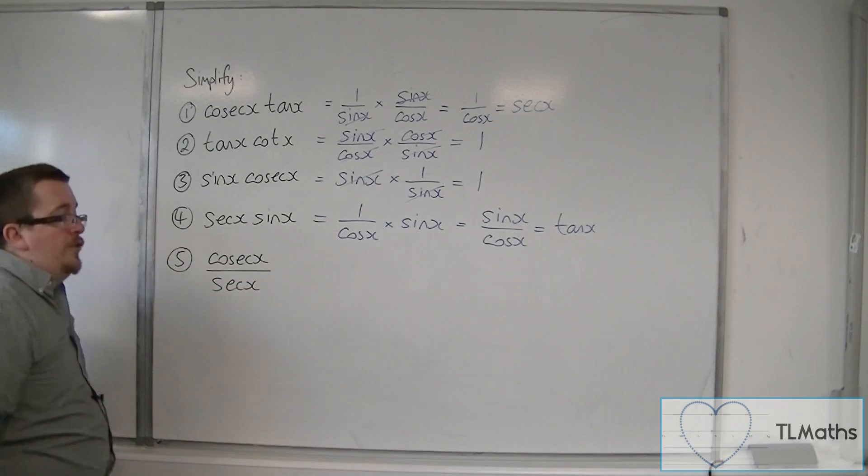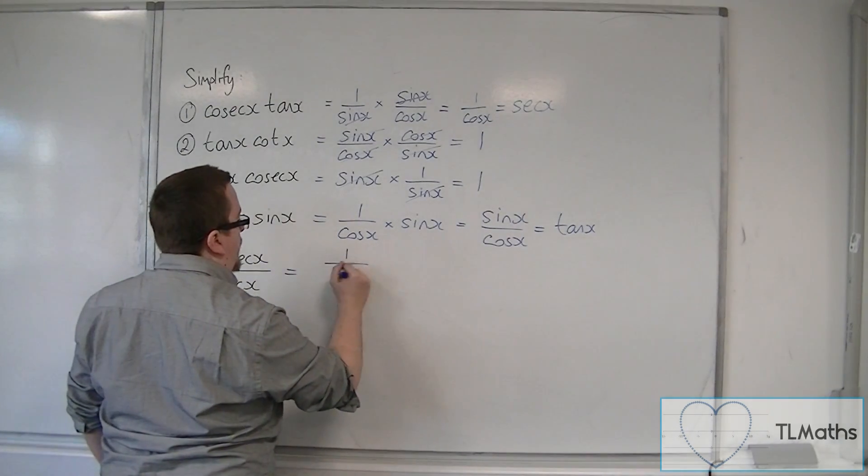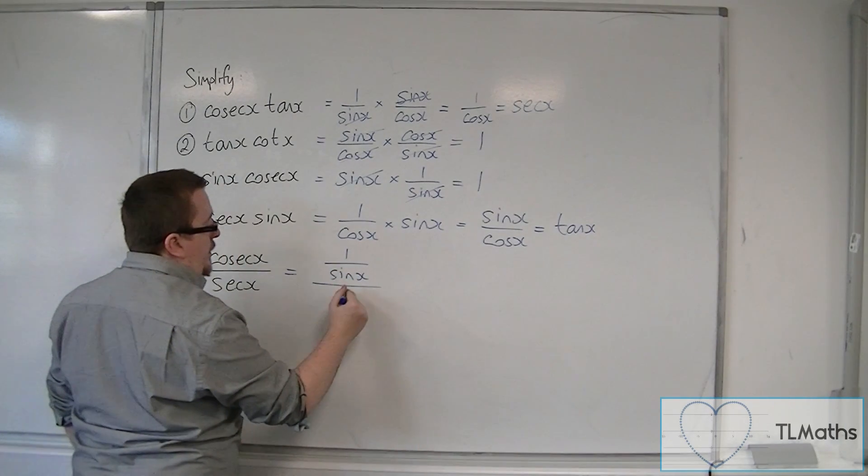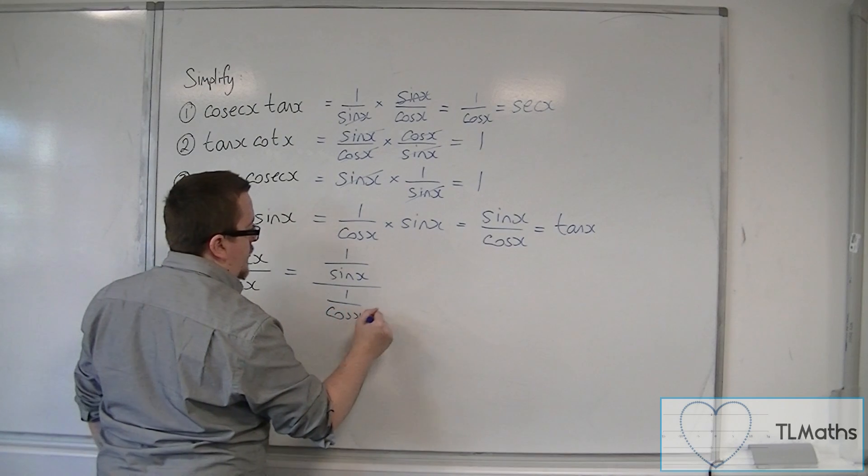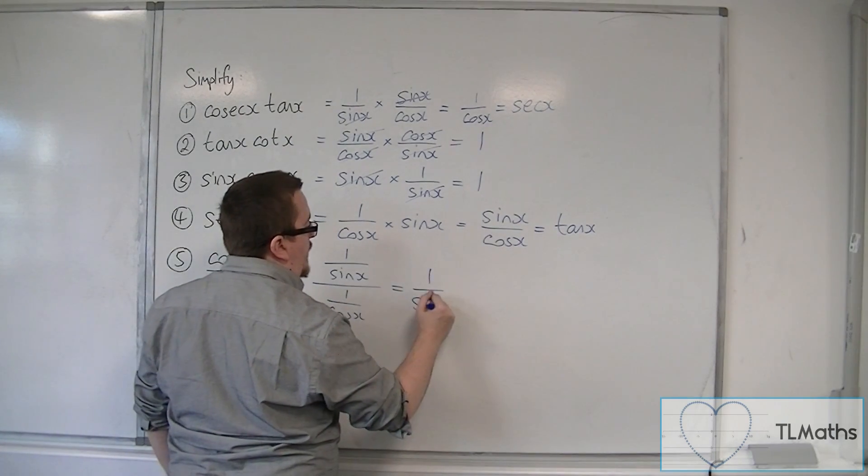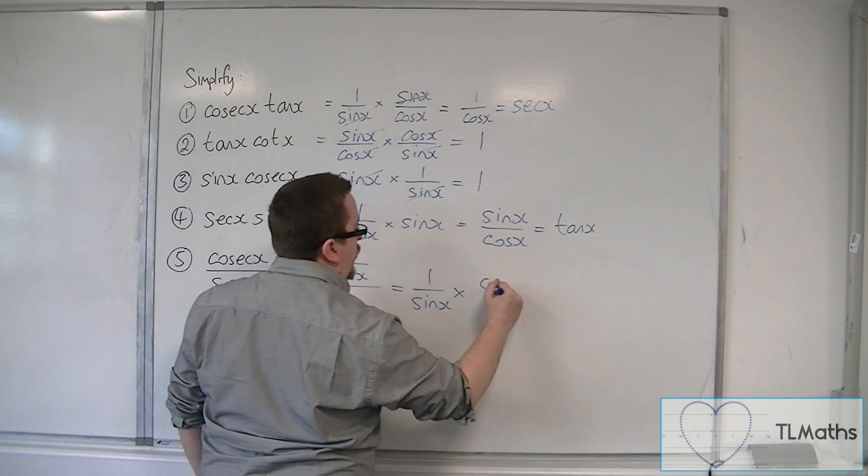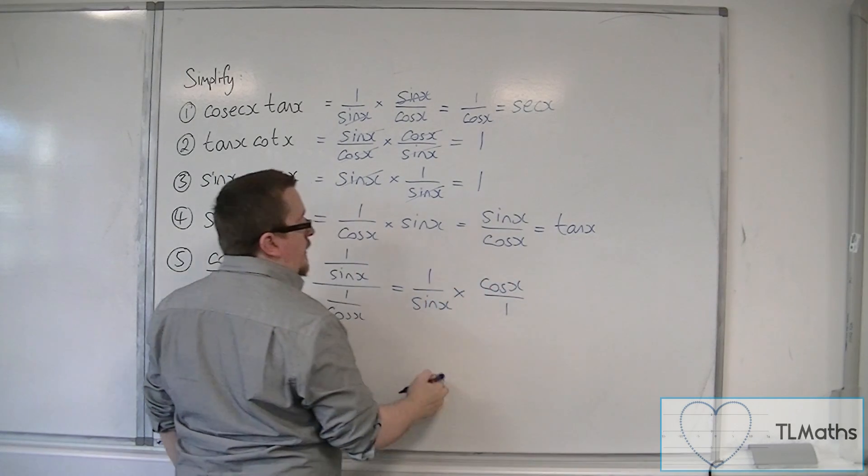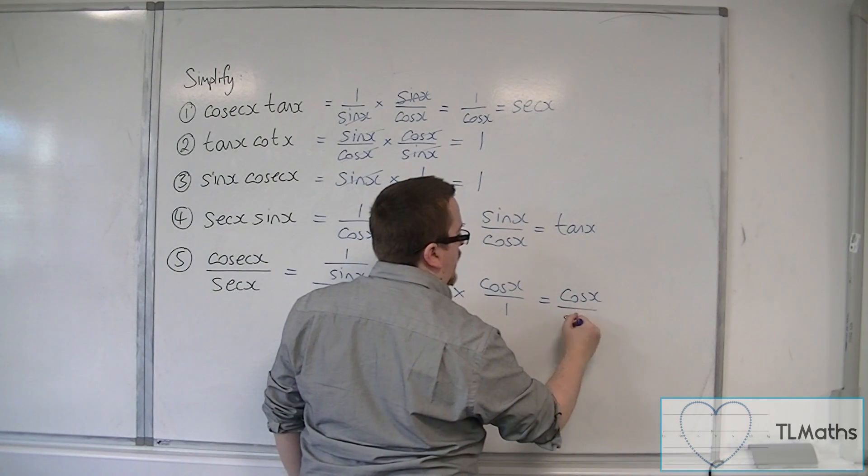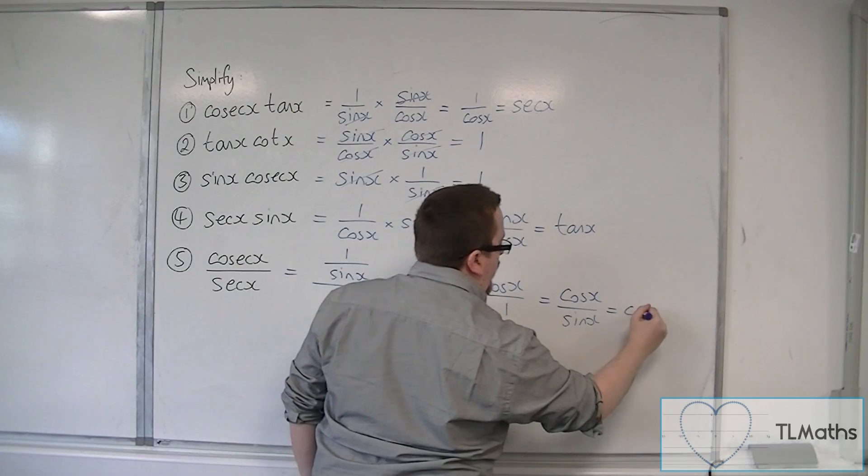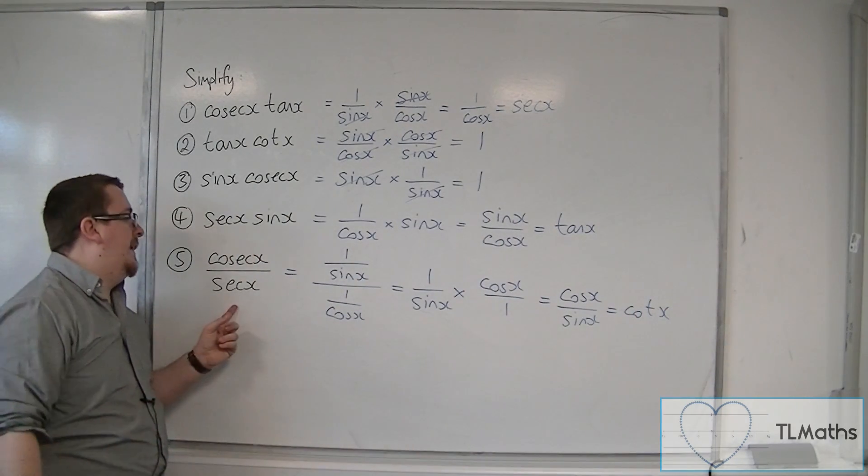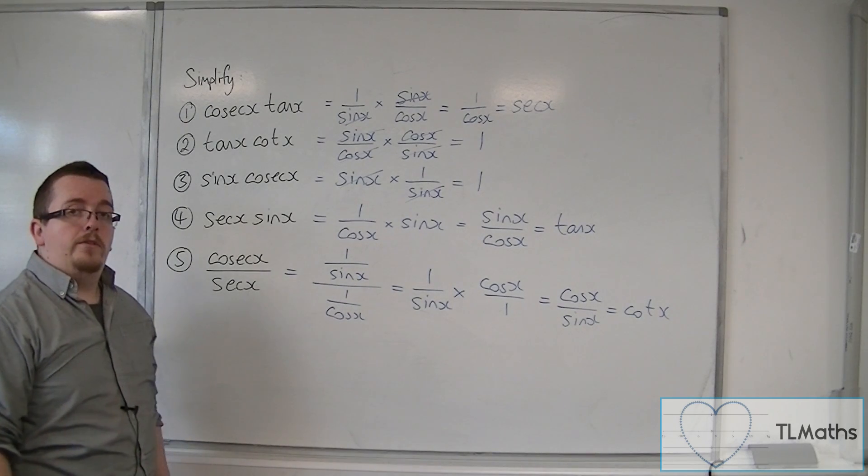Finally, cosec over sec. Cosec is 1 over sine, and that's divided by 1 over cos. Now 1 over sine divided by 1 over cos is the same as 1 over sine times cos over 1. Now 1 over sine times cos over 1 would just be cos over sine, which we know is cot. So cosec over sec is the same as cot.